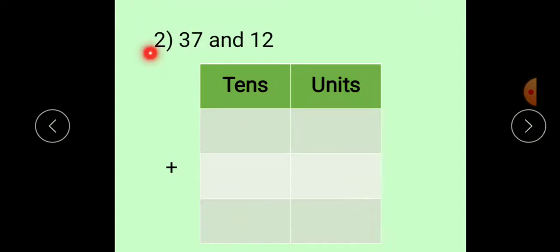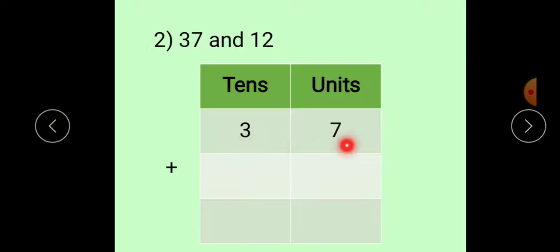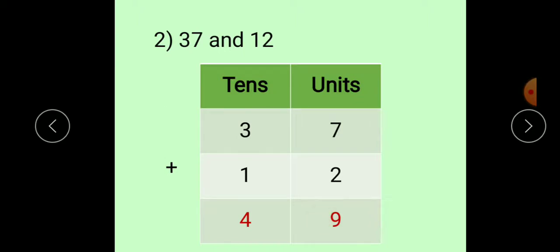See the next example. Second question is 37 and 12. Now, we have to arrange it first vertically. As it is a two-digit number, two places will be there: tens and units. First number is 37, so write 3 at tens place and 7 at units place. Second number is 12, so write 1 at tens place and 2 at units place. This is the sign of addition plus. Now, keep 7 in your mind, take out your two fingers. After 7, start forward counting: 8, 9. So, write 9 at units place. Then, move towards the tens place. 3 plus 1, you will get the answer 4. So, your answer is 49.